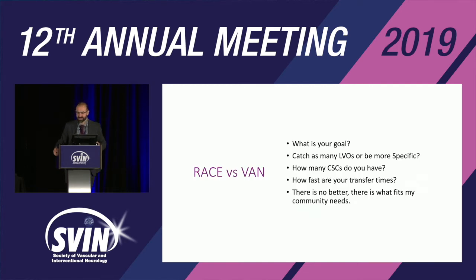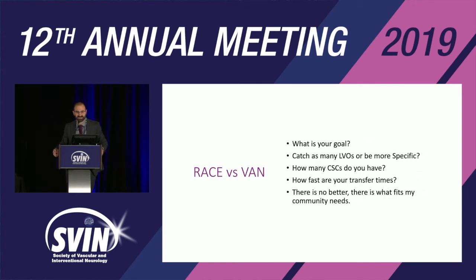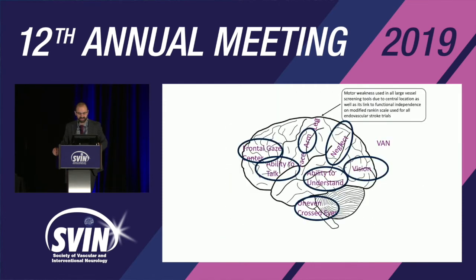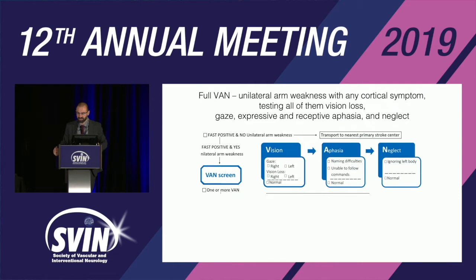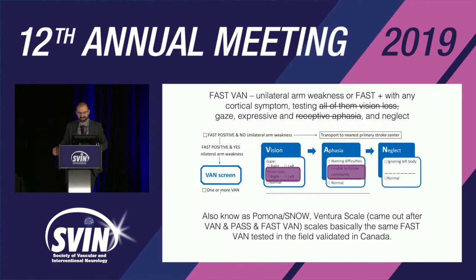The question of RACE versus VAN is really quantitative versus qualitative — that's the core issue. What is your goal? How many comprehensive stroke centers do you have? What are your primary stroke centers doing — are they screening everyone? In Phoenix, if you use a severity scale and go to a comprehensive stroke center, patients often don't get a CTA for one to three hours, and many go into collateral failure.